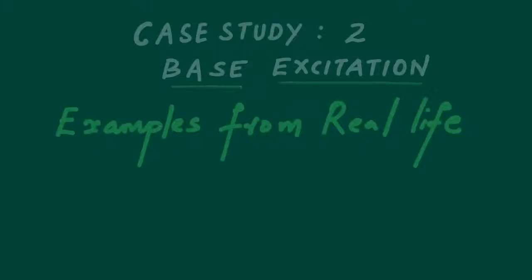Welcome back to the course. Today we will look into another case study. In the first case study we saw how to model a washing machine with eccentricity or rotary imbalance due to non-uniform loading of clothes, and found the system response. Now we have a similar problem where the excitation will be harmonic but slightly different in a few ways.